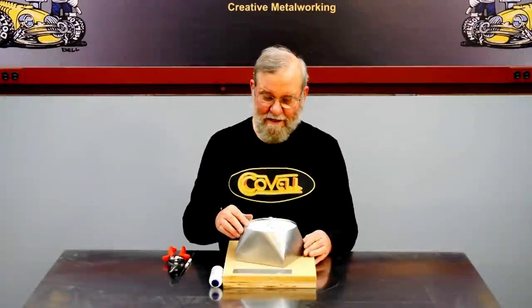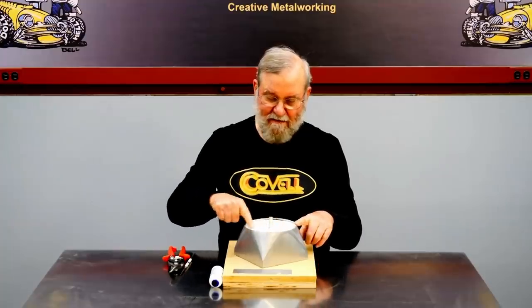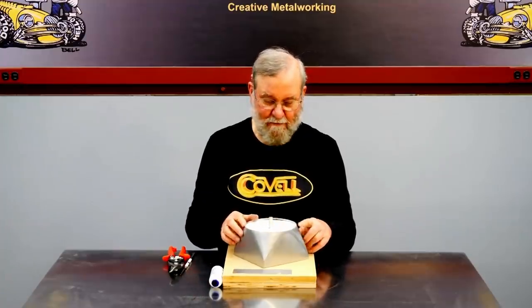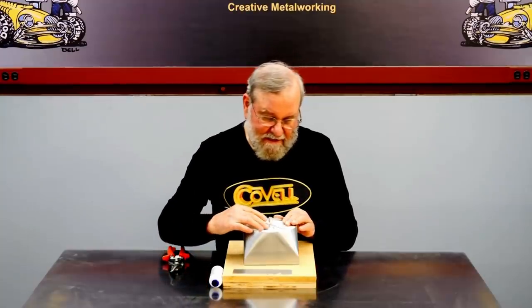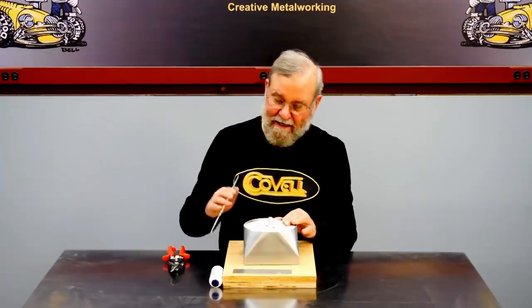So we're just about done with our transition. The last step is going to be to trim this top edge down flush with the disc on our form. And it would be easy to scribe this on the inside, but it would be difficult to see that scribe line because of the funny angle in here.